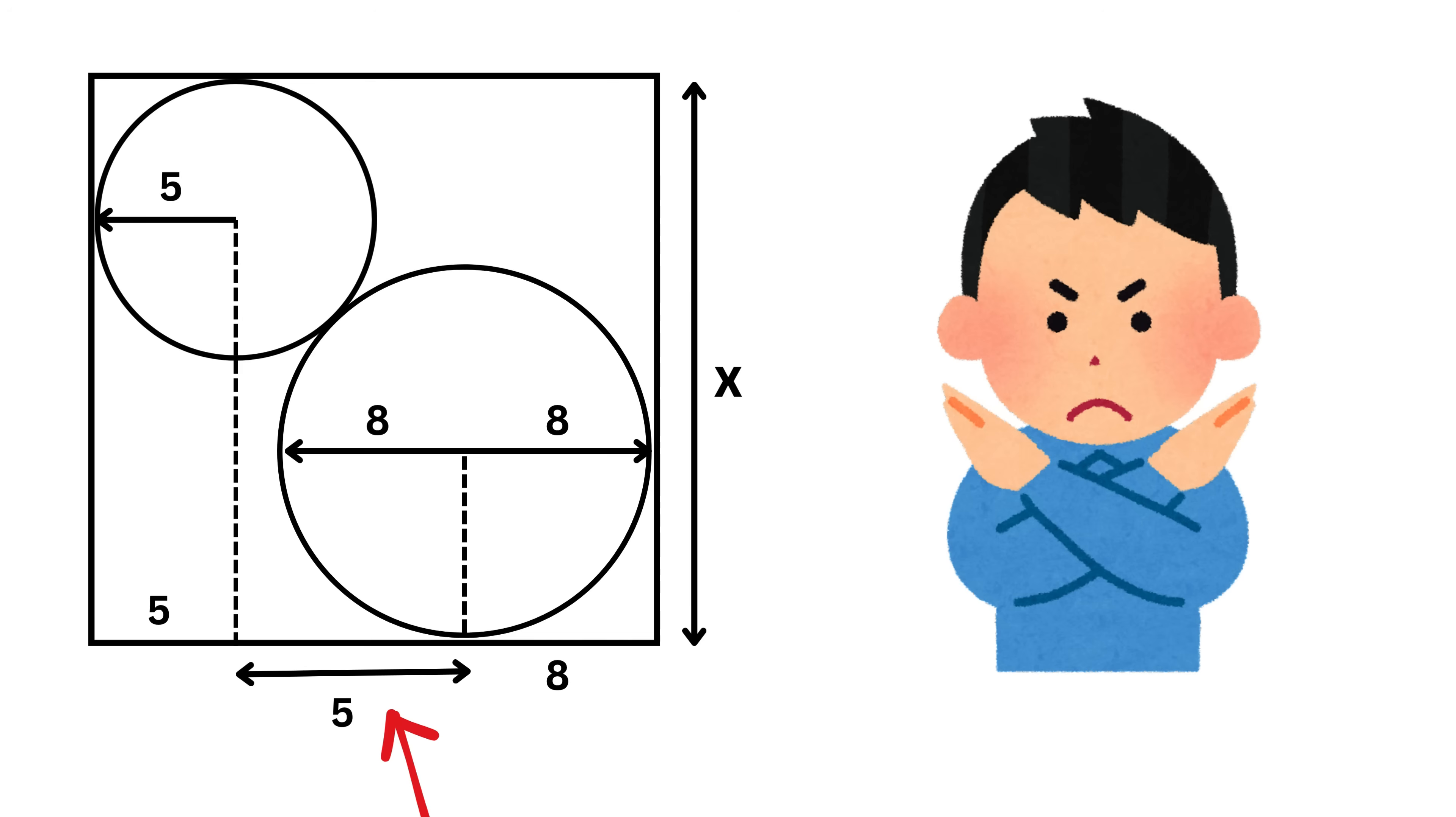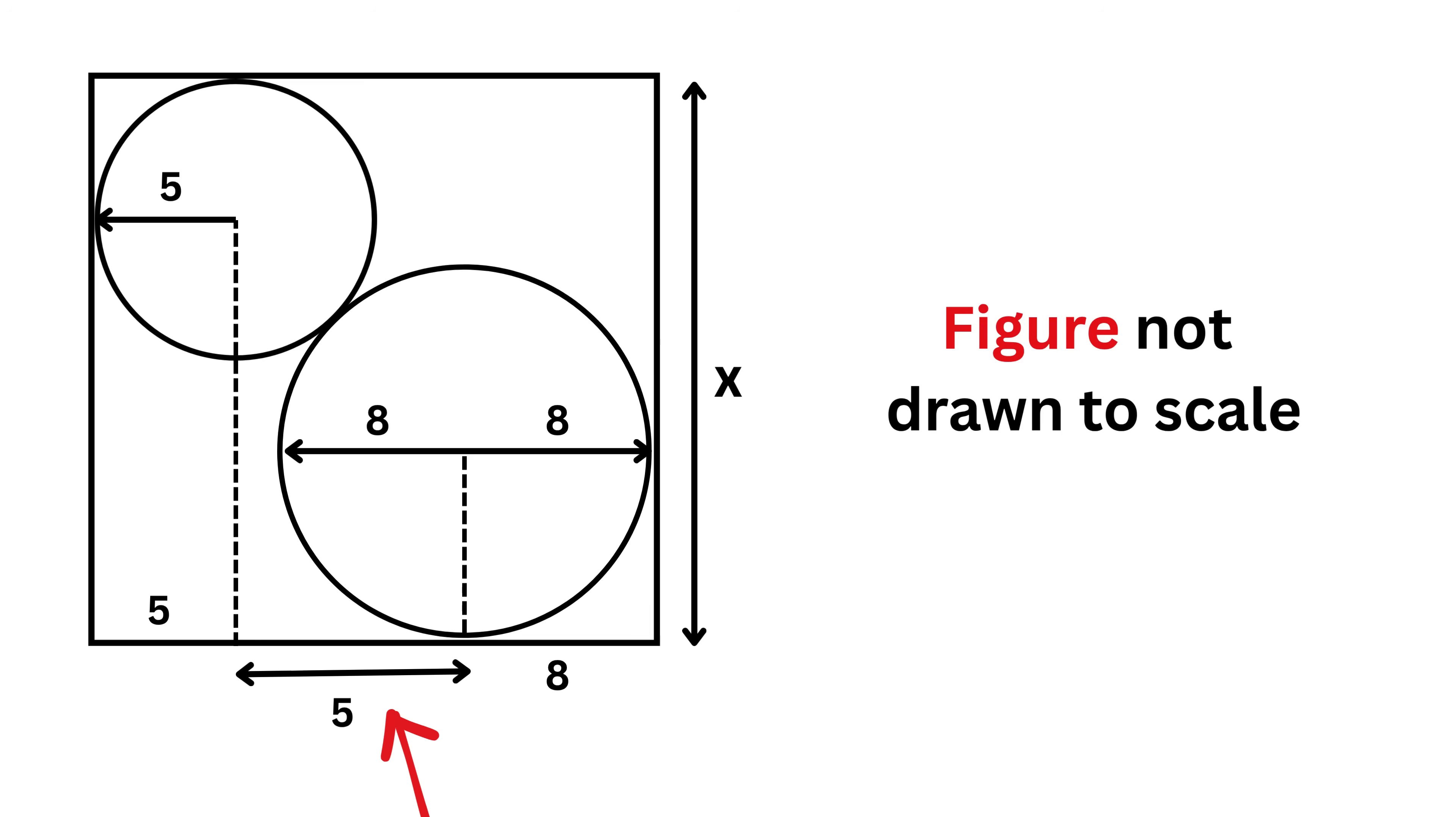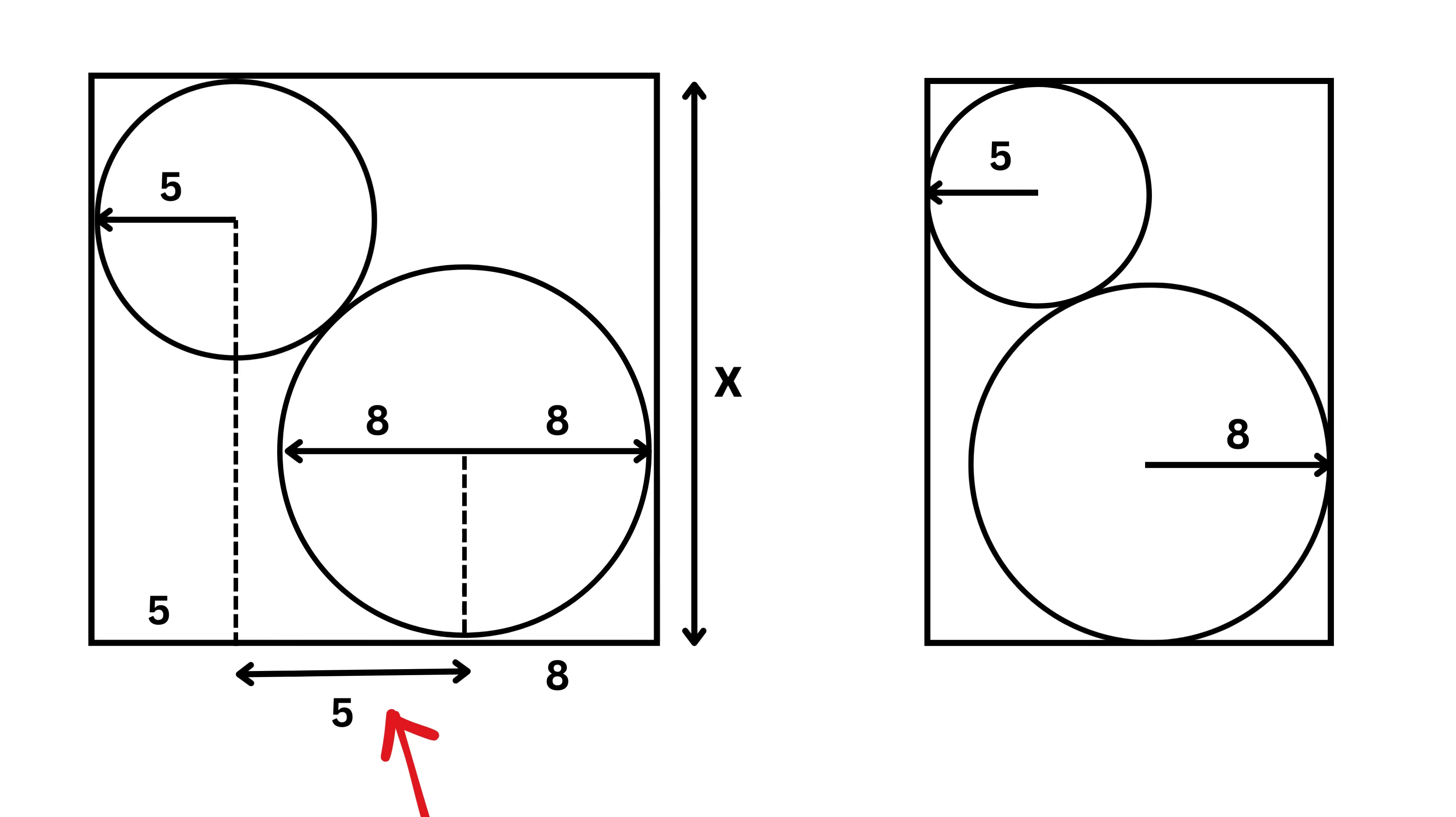It is not an impossible problem. It's just that the figure is not drawn to scale. Actual figure will look something like this, where length will be this side and width will be this side. That's why it's important to rely on the given numbers, not just the diagram. Remember that sometimes drawings can trick you, but the numbers won't.